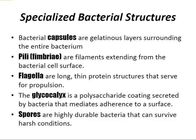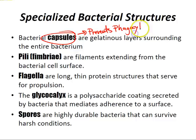Back to bacteria: bacteria have unique structures that serve specific functions — not universal, but important to the pathogenesis of specific bacteria. Bacterial capsules are gelatinous polysaccharide layers surrounding the entire bacterium. They prevent phagocytosis by immune cells. Capsular antigens are species-specific, and antibody attachment to the capsule causes it to swell — this is called the quellung reaction, a useful method of bacterial identification.